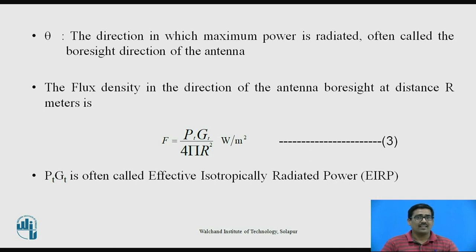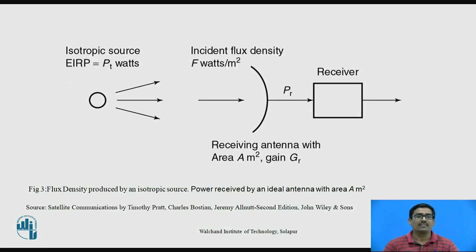The flux density in the direction of the antenna boresight at a distance r meters is defined as F = PtGt / (4πr²), in W/m². The product PtGt is called the effective isotropic radiated power (EIRP), where Pt is the transmitted power and Gt is the gain of the antenna. Figure 3 shows flux density produced by an isotropic source — that is, power received by an ideal antenna with area A m². The isotropic source radiates in all directions, giving EIRP = Pt watts, producing an incident flux density F (W/m²) that is received by the antenna with area A m² and gain GR.